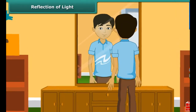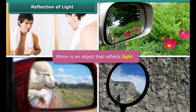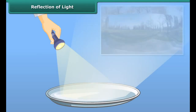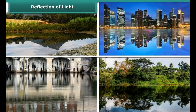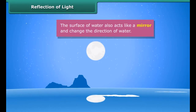It's no surprise that when we look in a mirror, we see an image of ourselves reflected back. A mirror is an object that reflects light. When light falls on a shiny stainless steel plate, it gets reflected. Therefore, any polished or shiny surface can act as a mirror and can change the direction of light. The surface of water also acts like a mirror and changes the direction of light, which is why we are able to see reflections in water as well.